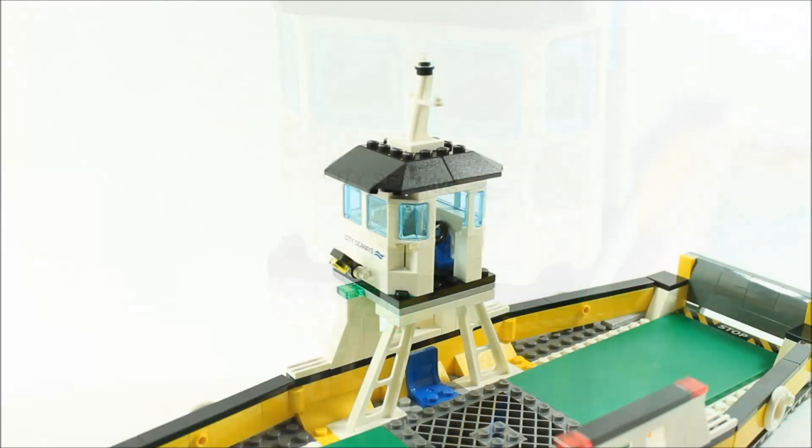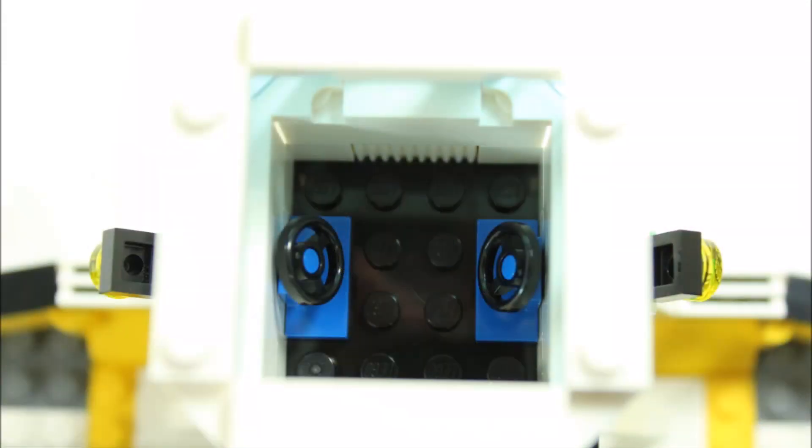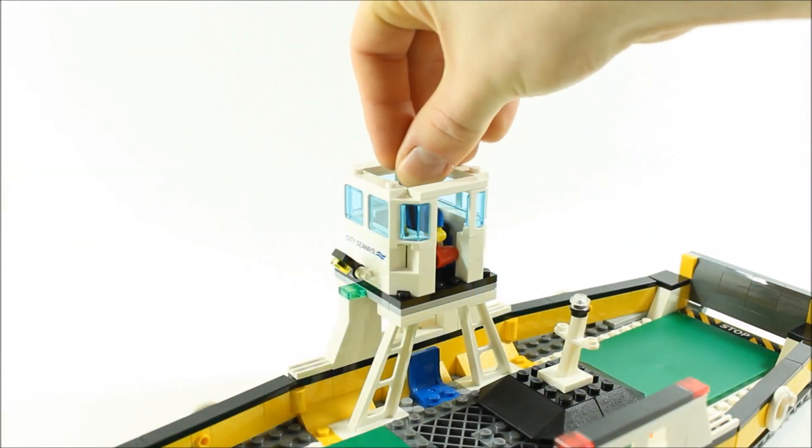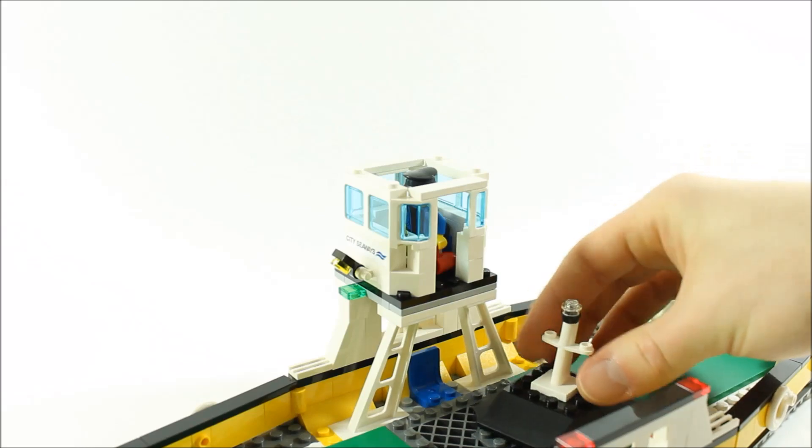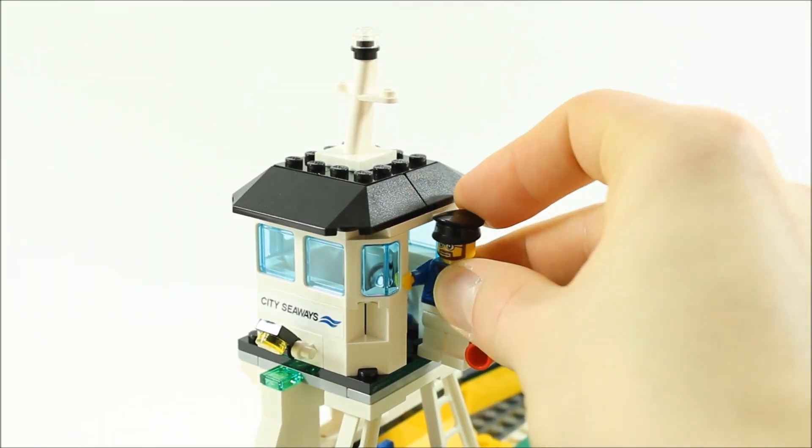Gaining access inside is quite easy because the black roof with antenna can pop off in one whole piece. Inside are dual steering wheels and you can simply clip in the captain, but you can also clip the captain onto the side, which is shown on the box.